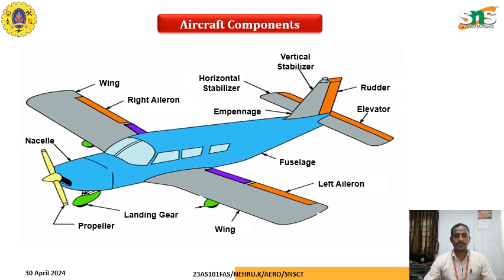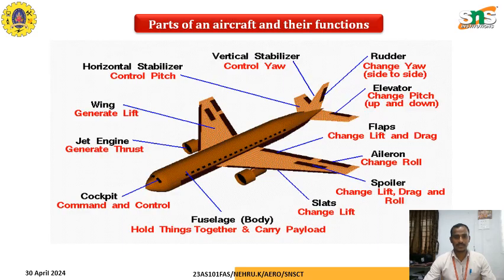The secondary control surfaces include spoilers, trim tabs, and other additional components. These are used in special cases — if you want to increase lift, decrease lift, spoil the lift, or trim the moment produced by the engine. For that purpose, we use these secondary control surfaces.